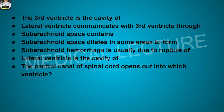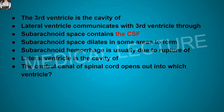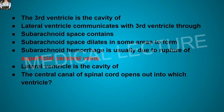The third ventricle is the cavity of diencephalon. The lateral ventricle communicates with the third ventricle through the foramen of Monroe. The subarachnoid space contains the cerebrospinal fluid. The subarachnoid space dilates in some areas to form the subarachnoid cistern. Subarachnoid hemorrhage is usually due to rupture of superficial cerebral veins.